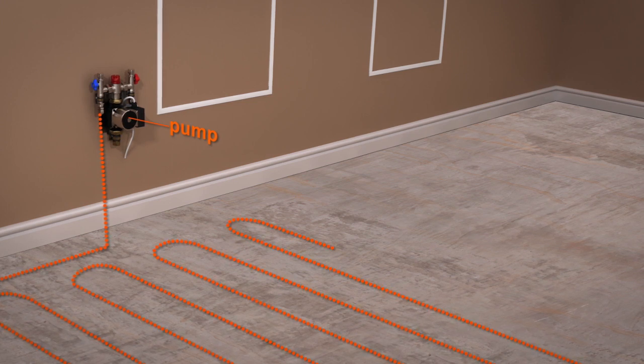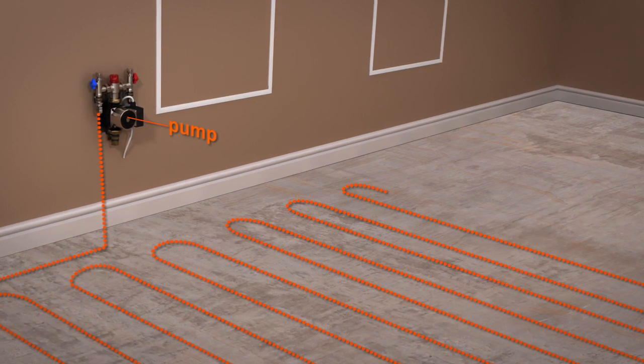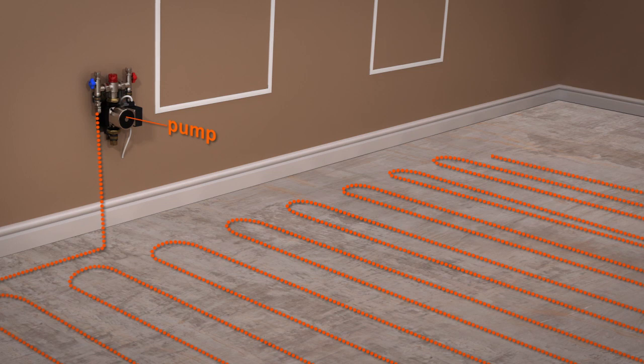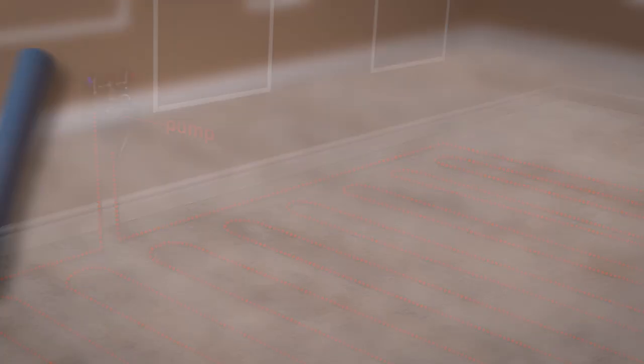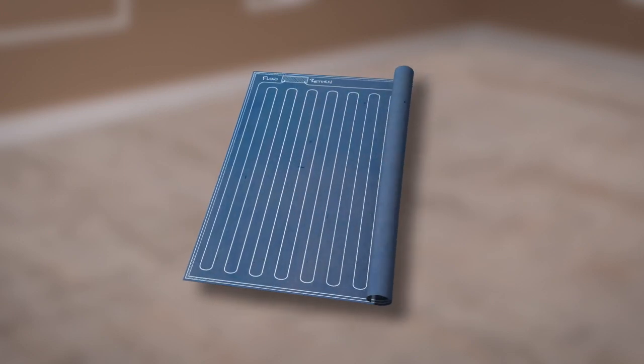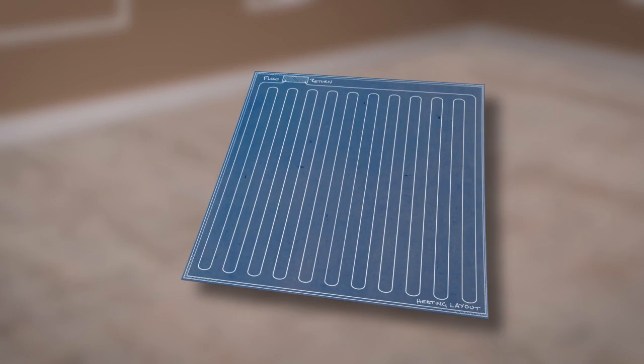Planning the ProWarm Overlay layout beforehand will save time during installation. Choose a suitable position for the underfloor heating pump and manifold to be sited. This will determine how the pipes will be laid out. A pipe layout design service will be provided if you have received a bespoke quotation.